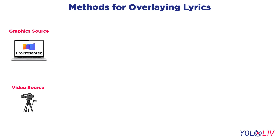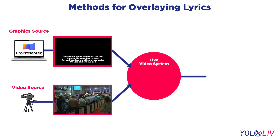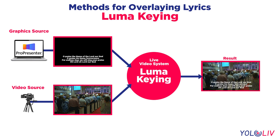To understand how this works, we need to understand how a video system overlays graphics on live video. This is a different process than how you would do it in post-production with a video editor, but rather how a broadcast system overlays graphics live. There are three methods for doing this. The first is what's called luma keying. With this method, a threshold is set for brightness, or luminance, and anything above that threshold is made visible, and anything darker than the threshold is made transparent. This is probably the simplest method, but you're basically limited to just using white lyrics directly over your video.